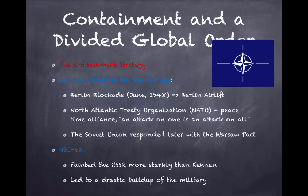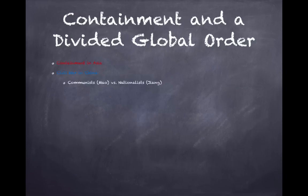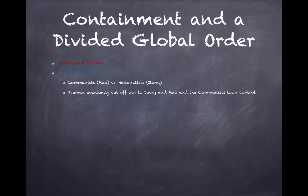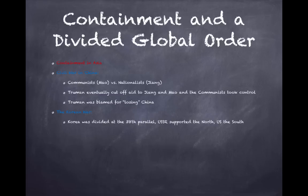In China, the communists led by Mao Zedong fought the nationalists led by Chiang Kai-shek. Truman eventually cut off aid to Chiang, and Mao and the communists took control. Truman was blamed for 'losing China,' and this became a huge turning point — future presidents would do everything possible to prevent a country from turning communist on their watch.